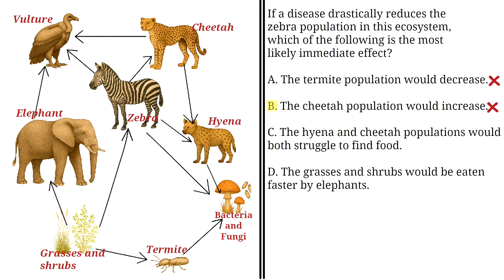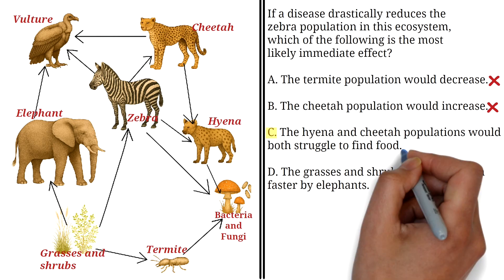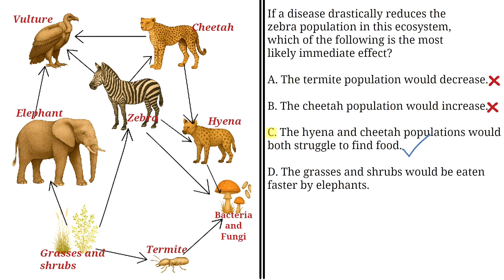C: The hyena and cheetah populations would both struggle to find food. This is the correct answer. Both hyenas and cheetahs directly rely on zebras as a primary food source. Therefore, with fewer zebras, these predators would immediately face challenges in finding enough prey to sustain their population.